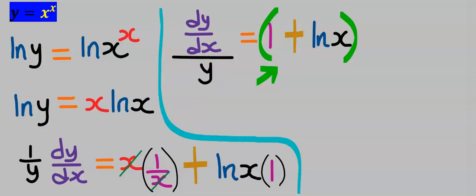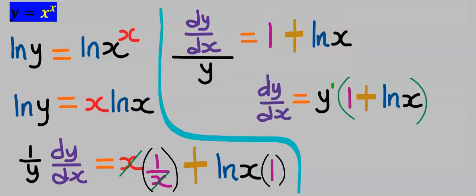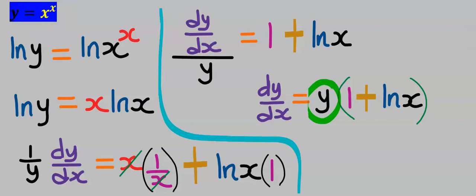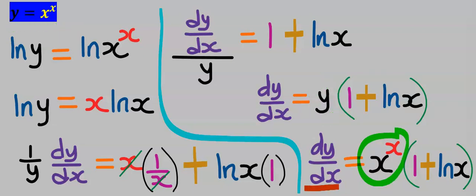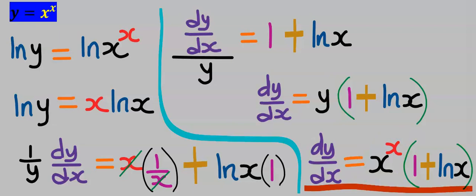Next, we are going to replace the value of y from the given question by replacing y with x to the power of x. This gives us our dy/dx.